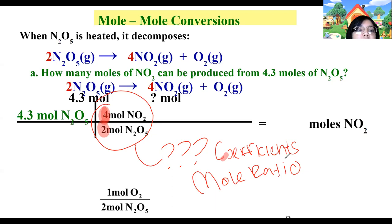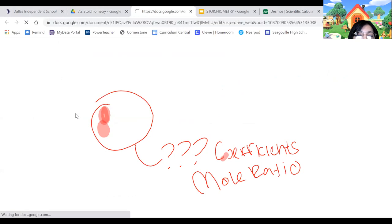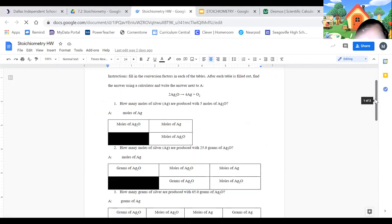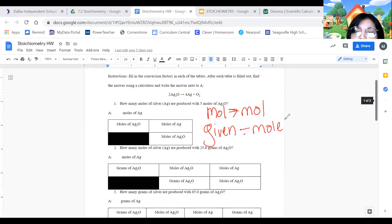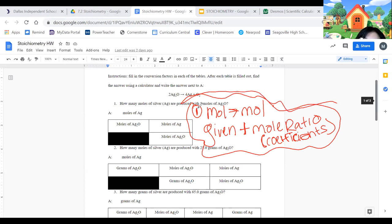For your notes, write: type of problem — mole to mole. The formula is: given plus mole ratio. The mole ratio you get from the coefficients. This is number one in the homework — it's given plus the mole ratio from the coefficients.